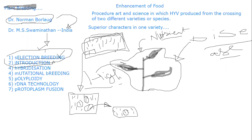Protoplasm fusion involves two different species or varieties — even two different varieties of the same species — whose protoplasts are fused. They are then grown using tissue culture techniques, and evaluated to see if superior qualities are present.